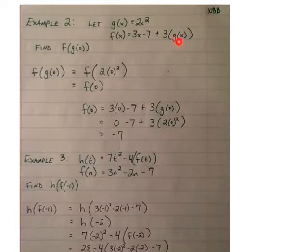So when we get to that point of evaluating f, we're going to have to look at g to see what's going on. So our first example, f of g of 0, means plug 0 into the g rule. So we have 2 times 0 squared, which is 0. So we're just evaluating f of 0, which means take 0 and plug it into rule f. So we get 3 times 0 minus 7 plus 3 times g of 0.